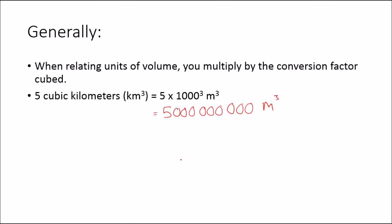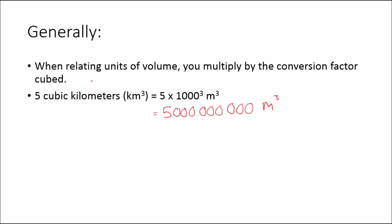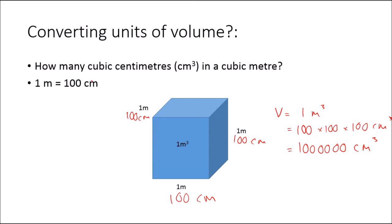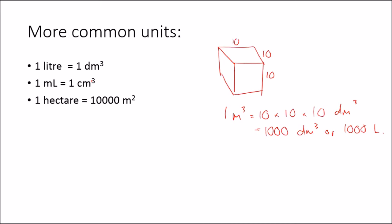Going back to our example of 5 cubic kilometers, which is 5 billion cubic meters, that would be 5 trillion liters. And if you think about how crazily big the ocean is, that's really nothing. Also, 1 mil is 1 centimeter cubed. So from the previous example, in 1 cubic meter there are a million cubic centimeters, meaning there are a million mils in 1 cubic meter. There are 1,000 mils in 1 liter, because a mil is a milliliter. So 1 cubic meter is 1,000 liters, and 1 liter is 1,000 mils.